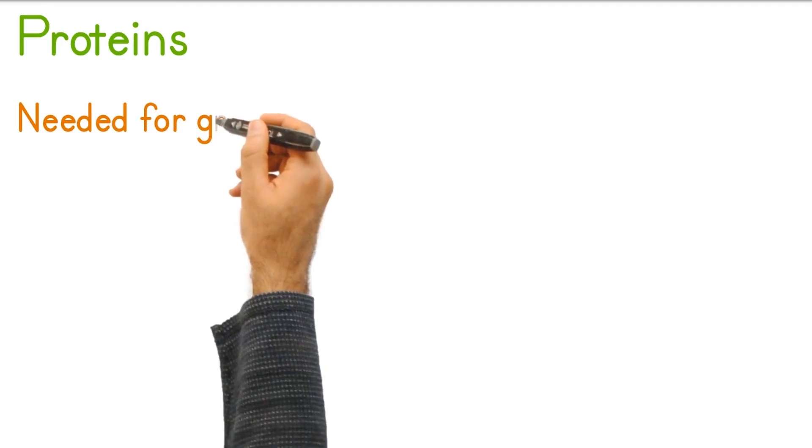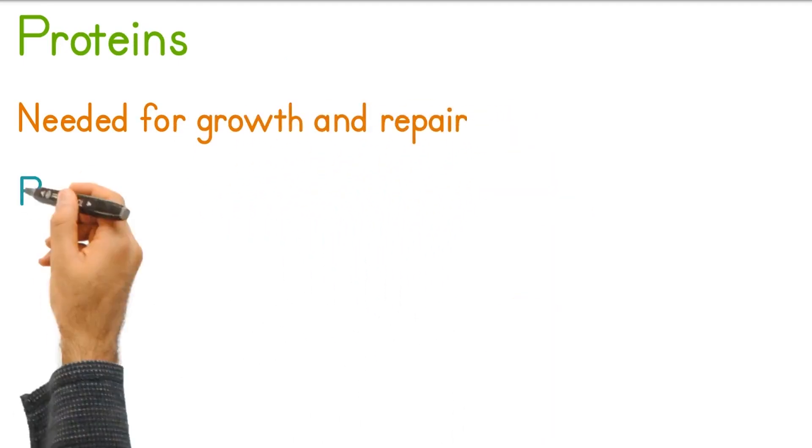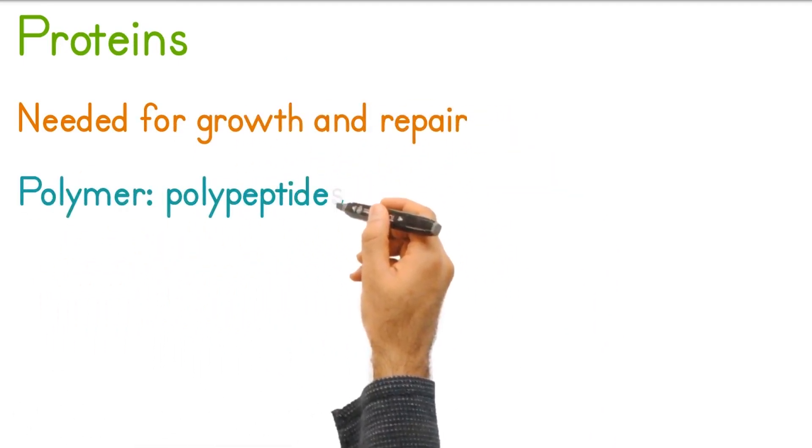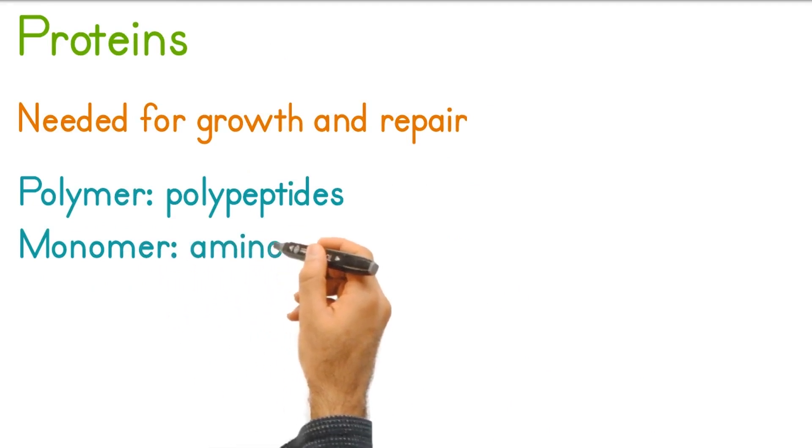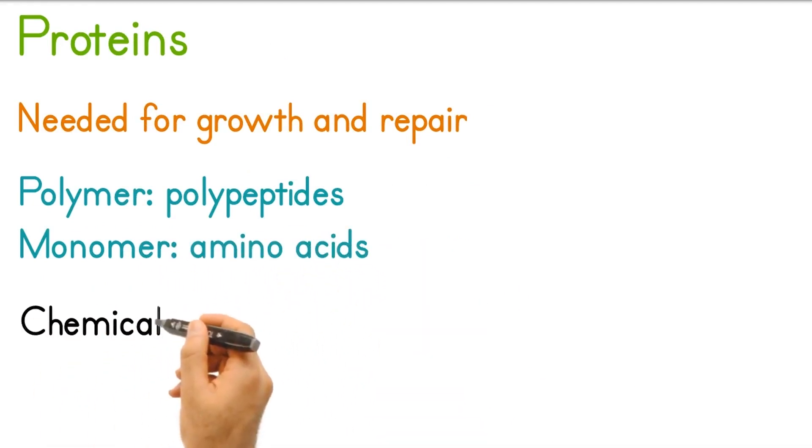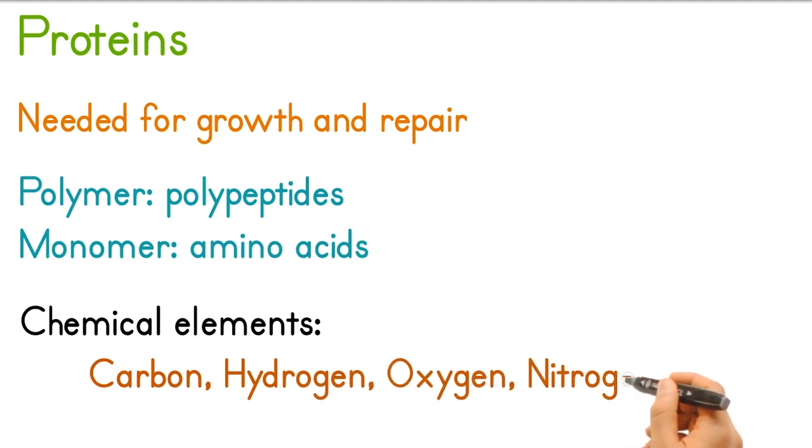Proteins. Needed for growth and repair in the body. The polymers are called polypeptides. The monomers are called amino acids. Consists of the chemical elements carbon, hydrogen, oxygen, nitrogen and sulfur.